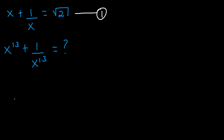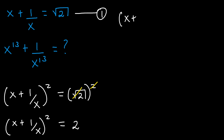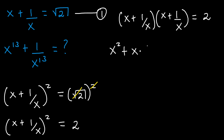From equation 1, if we square both sides, we shall have x plus 1 divided by x raised to the power of 2 equaling to the square root of 2 raised to the power of 2. This 2 will come with the square root, and so we shall have x plus 1 divided by x raised to the power of 2 equaling to 2. This can also be written as x plus 1 divided by x times x plus 1 divided by x equals to 2. And if we expand this, we shall have x times x which is x to the power of 2, plus x times 1 divided by x, plus 1 divided by x times x, and then plus 1 divided by x times 1 divided by x, equaling to 2.